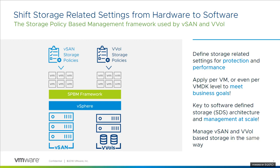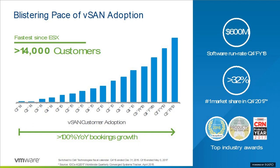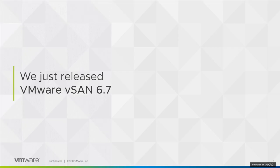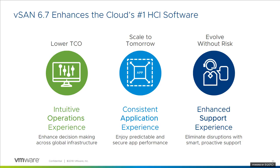As a result, we ended up this year with over 14,000 customers. We are the number one HCI company in the world as it stands right now. IDC has done various reports on this, and I think it says something about where we stand as a company and as a product today. Recently, we released VMware vSAN 6.7, and I'm going to look forward at what we've just released.